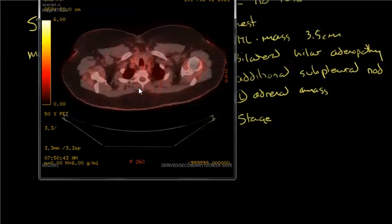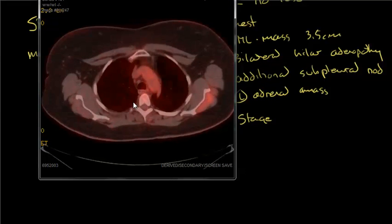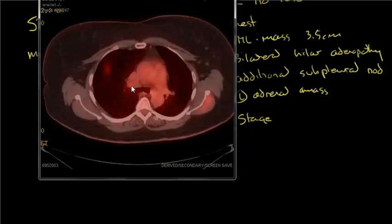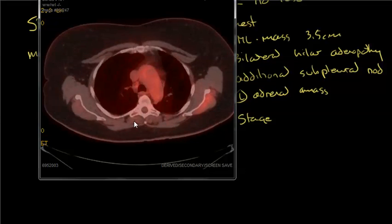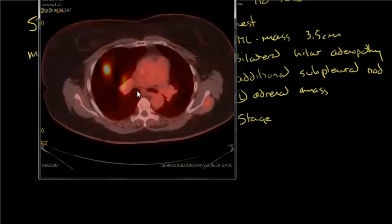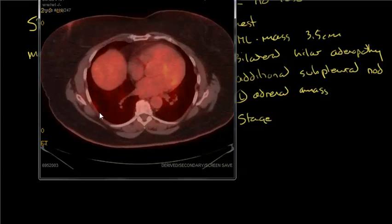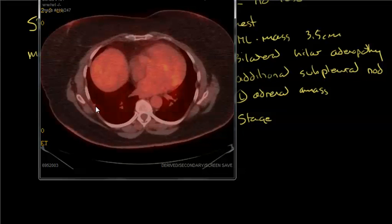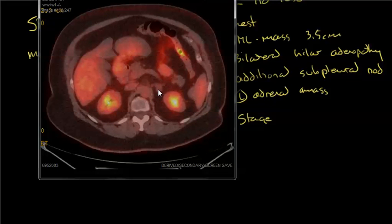Looking at the fused PET images, as we come down, that lesion up here doesn't really light up at all. Its SUV was less than one. The mass had an SUV in the 5 to 6 range. The hilar adenopathy had SUVs under 2, about 2 to 2.5 at best. That subpleural nodule has no activity. The adrenal gland is completely devoid of any activity.